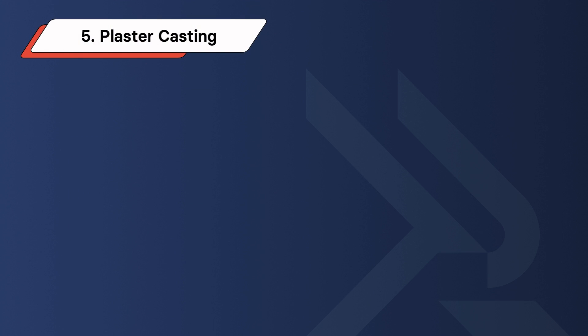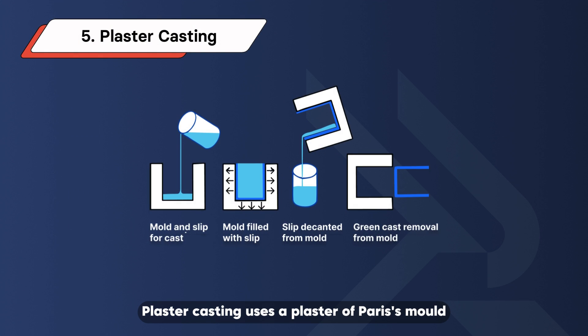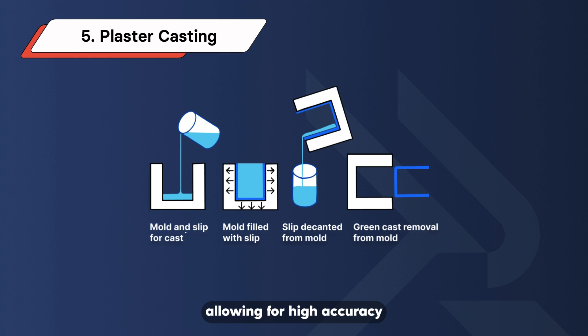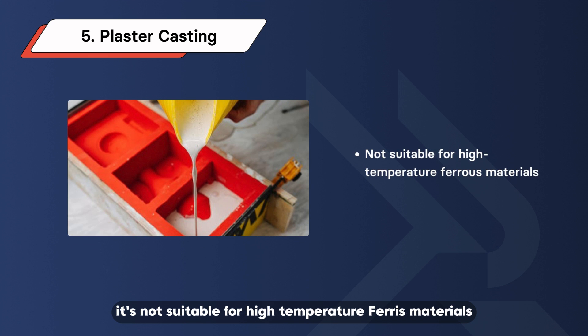Plaster Casting. Plaster casting uses a plaster of Paris mold, which cools the metal more slowly, allowing for high accuracy, especially with thin cross-section parts. However, it's not suitable for high-temperature ferrous materials.